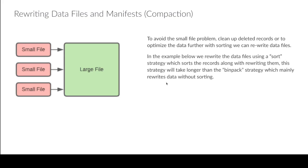You use a procedure called rewrite_data_files, and you generally have two strategies. There's a bin-pack strategy, which just packs the data in — pick the small files, make a big file, no sorting. It creates files of a target size, like 128 MB, so the first 128 MB of data goes in the first file, the next 128 MB in the next file, and so on. That's going to be the fastest because it's the simplest. If you're running very frequent compaction and need to keep it quick, that might be a good option.